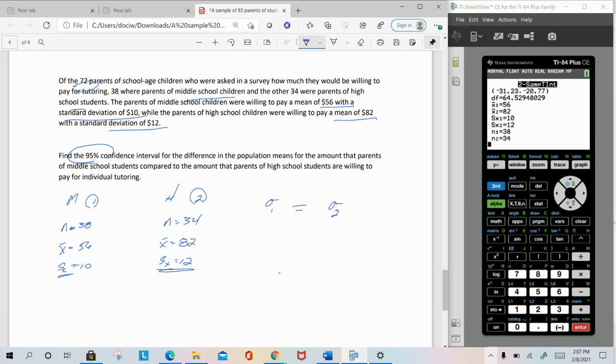And so we've got that μ1 minus μ2 is somewhere between negative 31.23 and negative 20.77. In other words, what I would conclude from that is with 95% confidence that the parents of middle school age children will pay for tutoring per hour compared to high school age children is somewhere between 31 and $21 an hour less. Or μ2 minus μ1, if I did the subtraction in reverse order, I would be able to conclude with 95% confidence that the mean amount that parents of high school children are willing to pay is somewhere between 21 and $31 more.